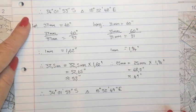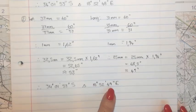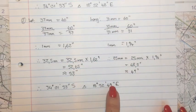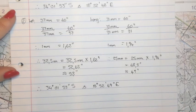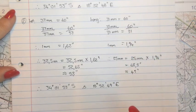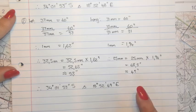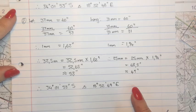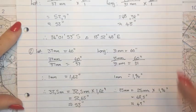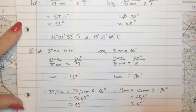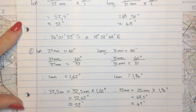Comparing the two answers: method one gave 48 seconds and method two gave 49 seconds for the longitudinal position — a one-second difference that is acceptable due to rounding. When marking, a small margin of error is allowed, but it's strongly advised to do very accurate measurements. These are the two methods that can be used to determine the absolute location of a feature on a map.